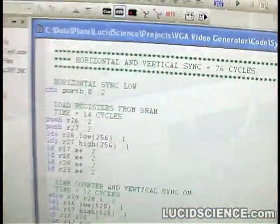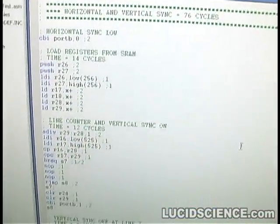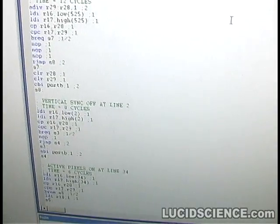The source code contains an interrupt service routine that renders the active video lines, leaving the free cycles to be used for graphics drawing.